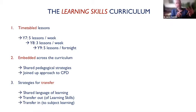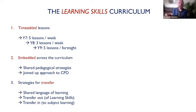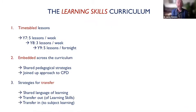It started with five lessons a week in Year 7. When that cohort went into Year 8, the curriculum time expanded with them: three lessons a week. Then into Year 9, five lessons a fortnight. Over three years, that cohort had over 400 lessons of learning skills throughout all of Key Stage 3. There were three structural elements: taught lessons; embedded elements across the curriculum with shared pedagogical strategies and joined-up professional development; and explicit strategies for transfer - carefully managing transfer out of the learning skills classroom and across the curriculum.